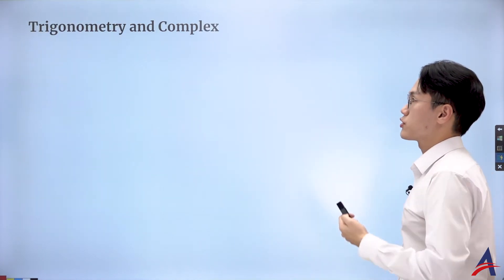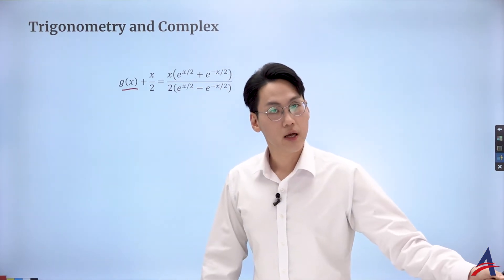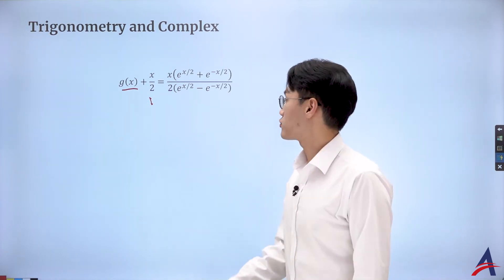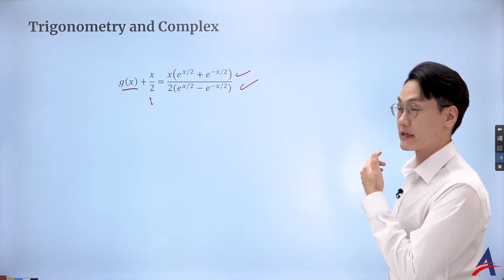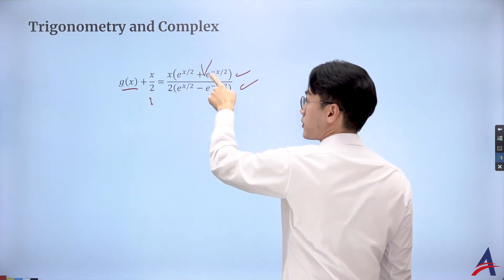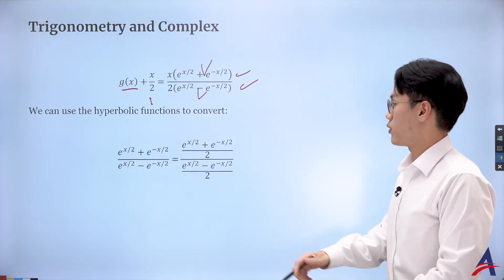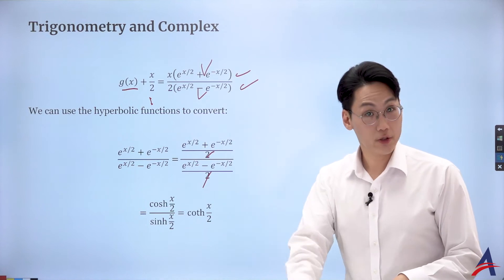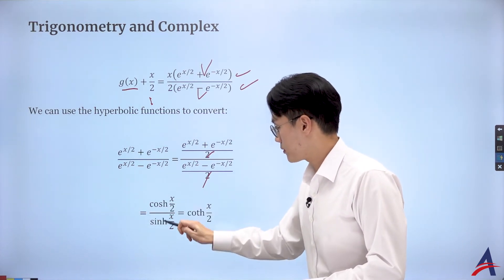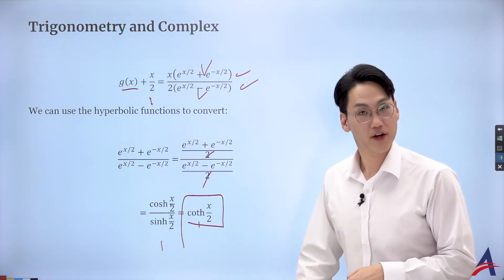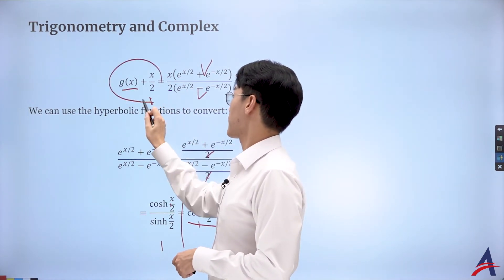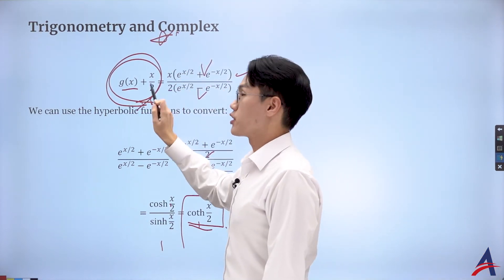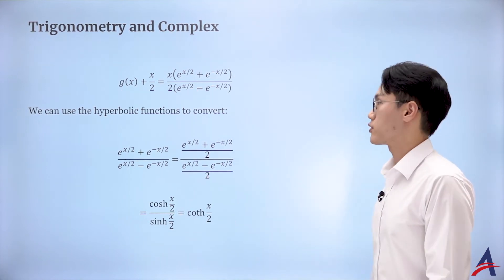Now let's return to our generating function. We had the generating function from before, then added x over 2 to eliminate the odd term, leaving only even terms. After dividing top and bottom by e to the negative x over 2, we notice the top becomes a hyperbolic cosine and the bottom becomes a hyperbolic sine — the 2's cancel. The ratio of hyperbolic cosine to hyperbolic sine is the hyperbolic cotangent, just as cosine over sine is cotangent. So this generating function is simply x over 2 times the hyperbolic cotangent of x over 2.